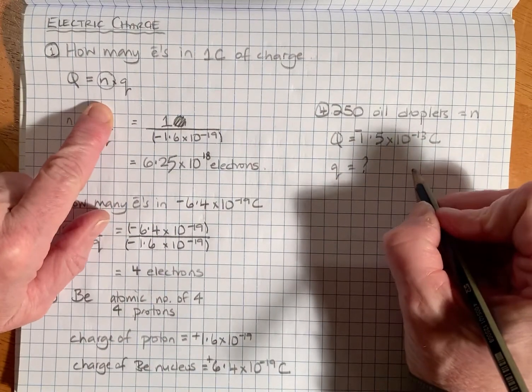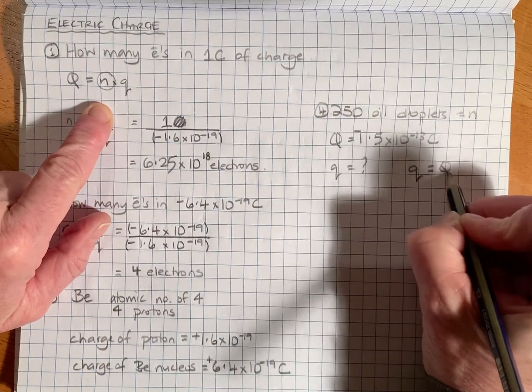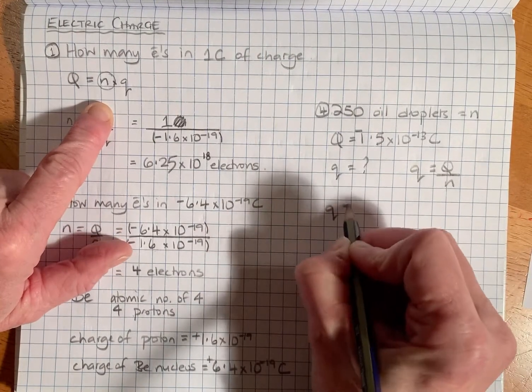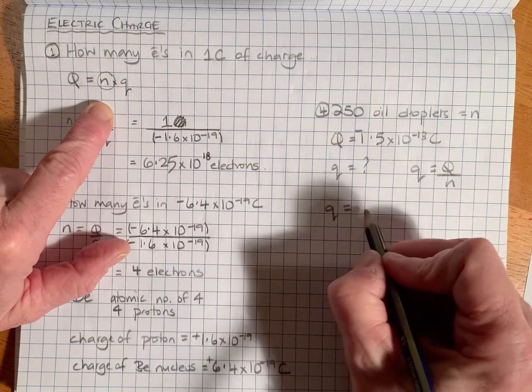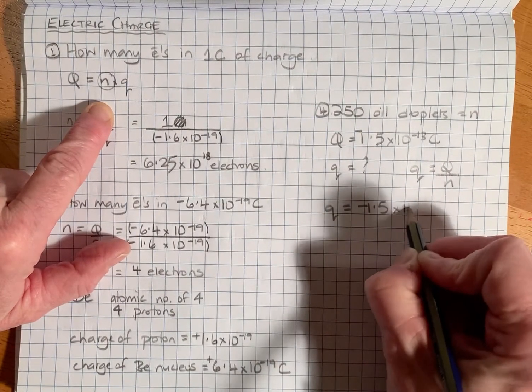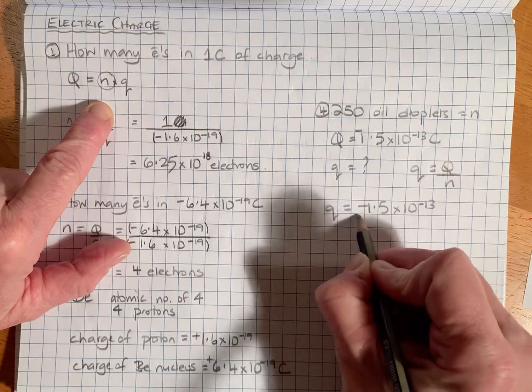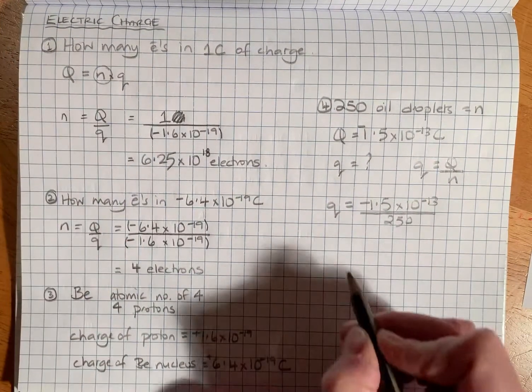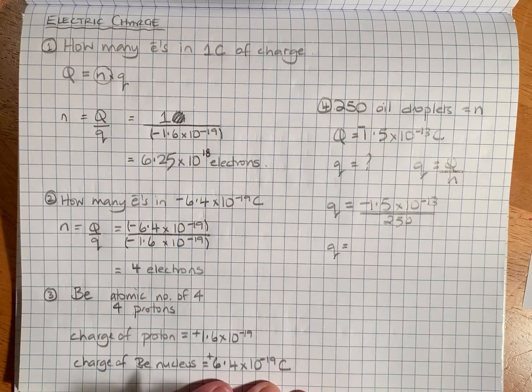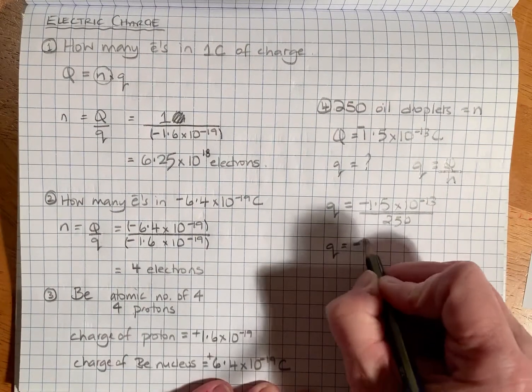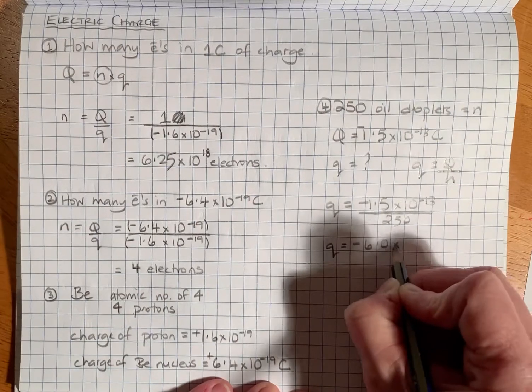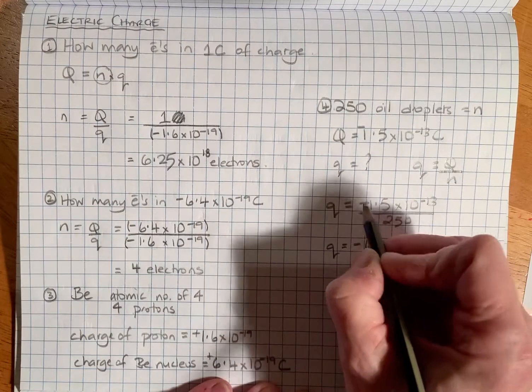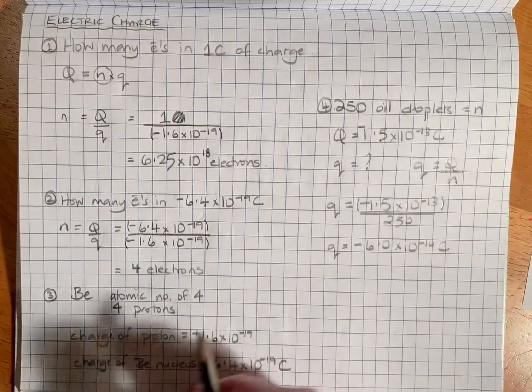If we rearrange the formula, little q is equal to big Q total charge over number of particles n. So the total charge is -1.5 times 10 to the minus 13 and there are 250 droplets, so the charge on one droplet will be -6.0 times 10 to the minus 16 coulombs.